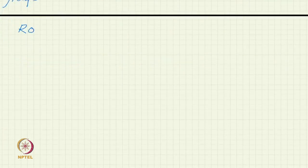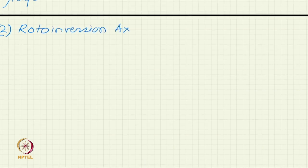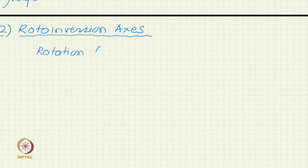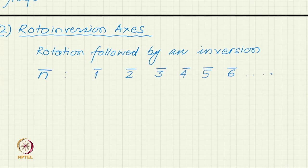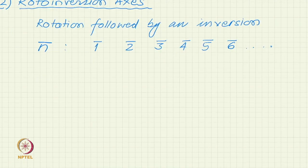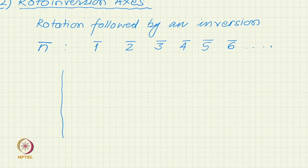We can also have rotoinversion. The second type is the rotoinversion axis, which involves rotation followed by an inversion. The notation is n-bar: 1-bar, 6-bar, etc. The n-fold rotation axis always indicates rotation by a minimum angle, but it is followed by an inversion process.